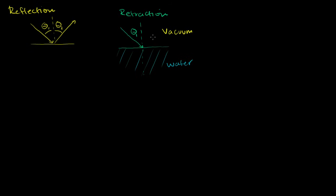Let's just say that we have a medium where light will travel slower. What's going to happen is this ray is actually going to switch direction — it's going to bend. Instead of continuing in that same direction, it's going to bend a bit and go down in that direction. This angle here, theta 2, is the angle of refraction, and theta 1 is the angle of incidence, both measured against that perpendicular.